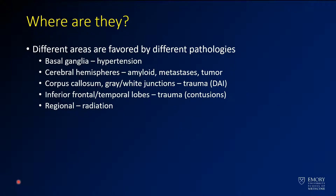You also want to think about the distribution. By far, especially on CT where you're going to see the vast majority of your hemorrhages, they occur in central areas — the basal ganglia. Hypertensive hemorrhages most commonly occur in the pons, the thalami, and the basal ganglia. Those are the areas you need to be thinking about.